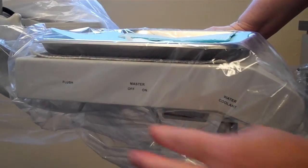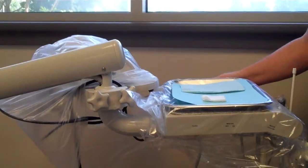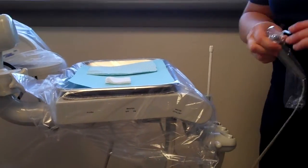And then you'll turn on your unit. Make sure the switch is on. Bring the tray delivery system over to next to the window. You'll take your air and water syringe.